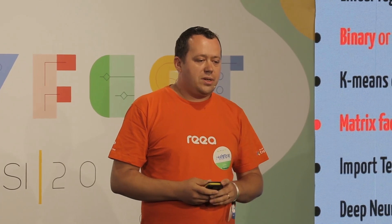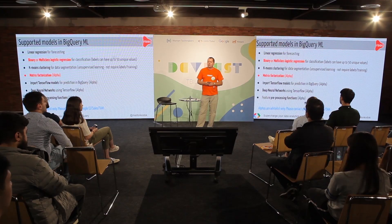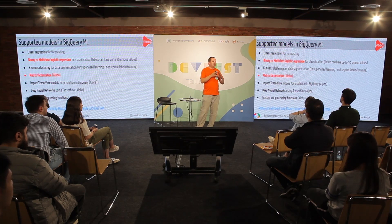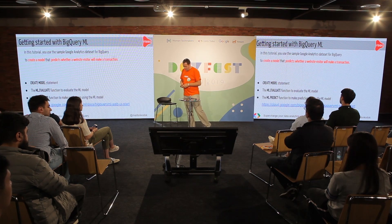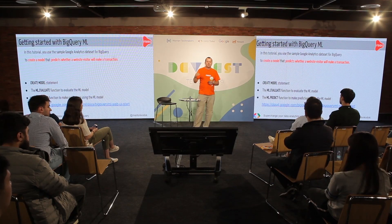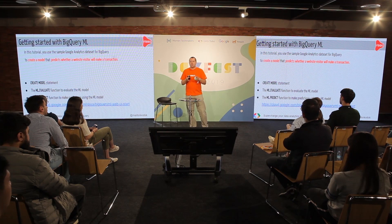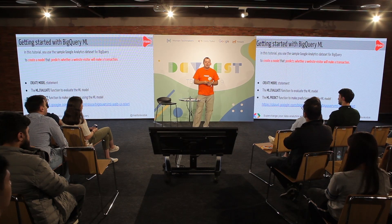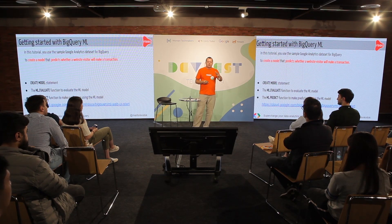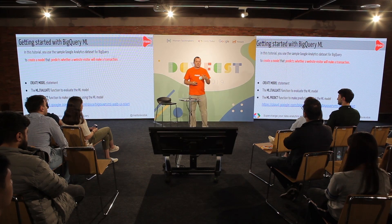I will show only two models here and won't cover the theory behind them, because at this phase we don't need to know the theories. There's an accessible example at a link shown here that you can try at home. It creates a model that predicts, from a website hit, which visitors will make a transaction — based on a machine learning algorithm. For this, you need to write three queries: a CREATE MODEL, an EVALUATE, and a PREDICT one.